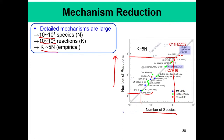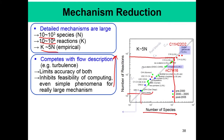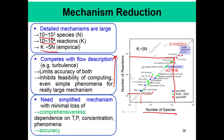We need essentially simplified mechanisms with minimal loss of comprehensiveness over ranges of temperature, pressure, and species concentrations, and they should be accurate. They should be able to predict things like ignition delay, laminar flame speed, and extinction strain rate to reasonably good accuracy.